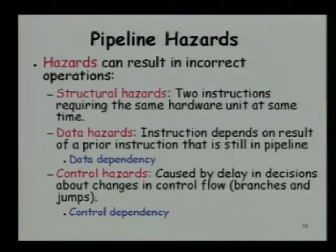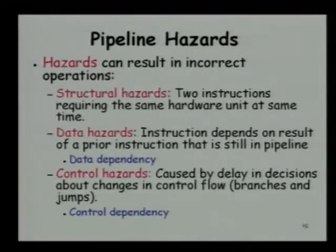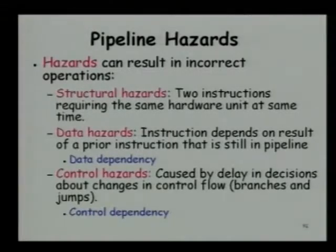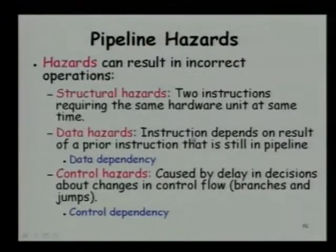An example of a structural hazard is when one instruction is being fetched and another instruction is either being decoded and its operand is being fetched, or a memory operation is occurring. So if one instruction is being fetched and a memory operation is occurring for another instruction, and you have only one cache that can supply only one unit of data per cycle, that would result in a structural hazard. On the other hand, a data hazard would occur when one instruction depends on the result of another instruction.